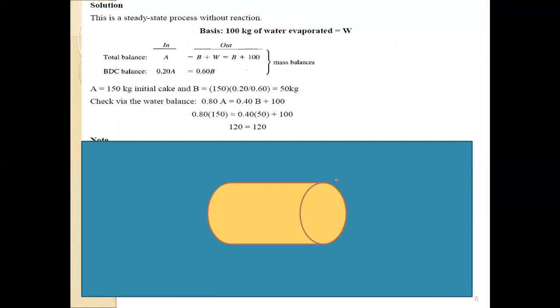So the process is a steady state process. The dryer will be the system. This is the system boundary. And you have two outputs from the dryer: the water vapor and the dry material.